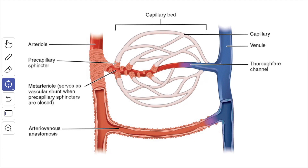All three layers — the tunica intima, the tunica media, and the tunica adventitia — are thin as compared to the arteries. In arterioles, the adventitia is made up of a thin network of collagen fibers. The arterioles are the main regulator of peripheral vascular resistance. Contraction and relaxation of the smooth muscle in the wall of the arterioles can alter the peripheral vascular resistance, blood pressure, and blood flow.